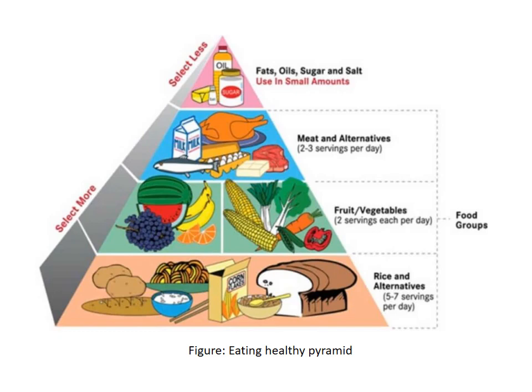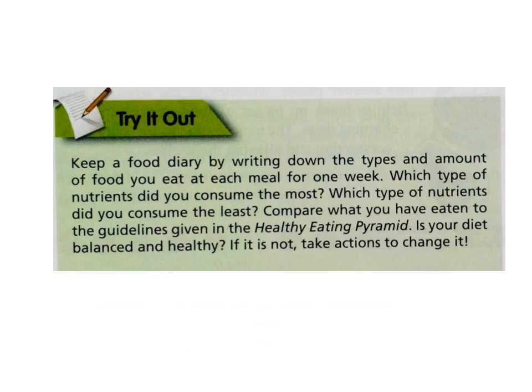There is an activity for the whole week: keep a food diary by writing down the types and amounts of food you eat at each meal for one week. Which type of nutrients did you consume the most? Which the least? Compare what you have eaten to the guidelines in the food pyramid, and tell whether your diet is balanced and healthy, and if not, what you should do to make it healthy and balanced.